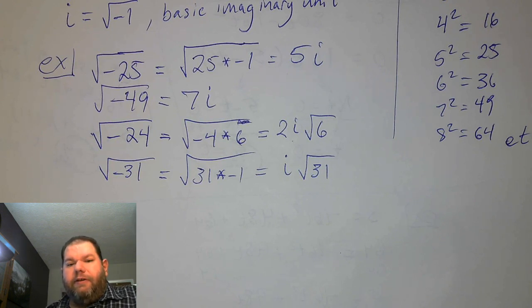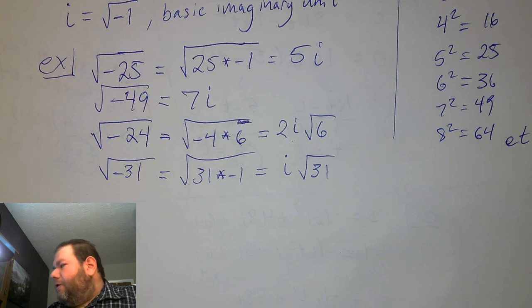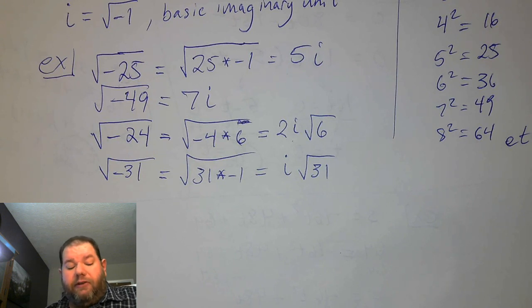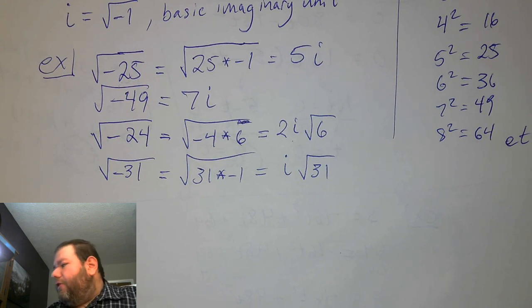i times i is actually a negative number. The same rules that apply to real numbers don't necessarily apply to imaginary numbers — that's why they're a completely different number system.